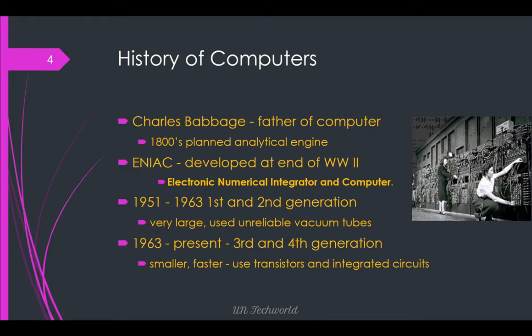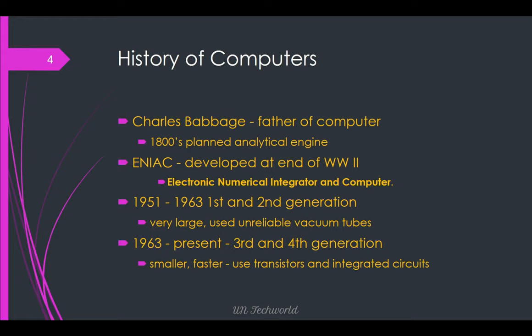At that time, there were no transistors or resistors used — only vacuum tubes were used to create the 1st and 2nd generation computers. In 1963, the 3rd and 4th generation computers were introduced. They were smaller and faster, using transistors and integrated circuits. Nowadays we are using microprocessors. The size of the computer is very small and much faster compared to 1963 and earlier versions.